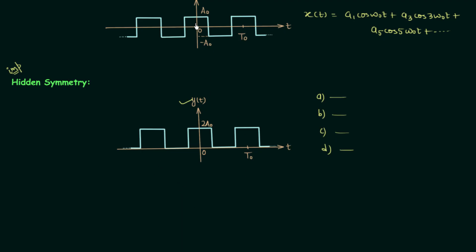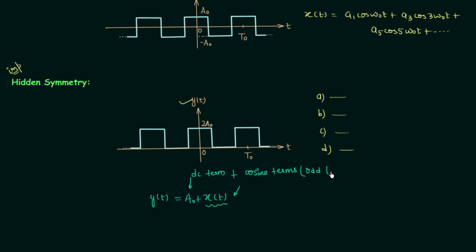Comparing signal Yt with signal Xt, we find Yt can be obtained after performing an upward amplitude shift. So Yt equals Xt after amplitude shifting by A0. Since Xt is an even half wave symmetric signal, it has only cosine terms with odd harmonics. Therefore, signal Yt will have a DC term along with cosine terms with odd harmonics. Whichever option contains a DC term along with cosine terms with odd harmonics is the answer. This is how you identify hidden symmetry.